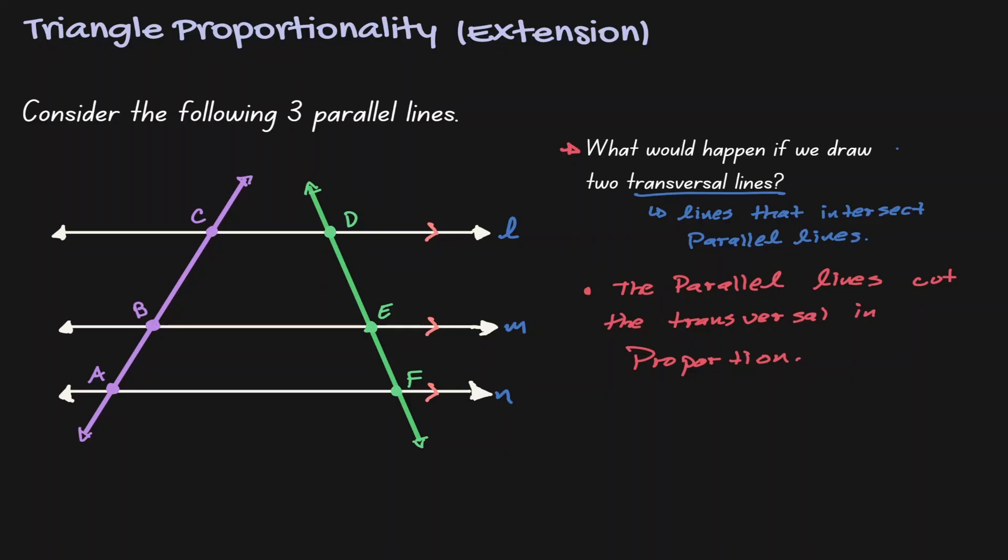And because this is true, if we get line segment AB and we divide it by the line segment BC, that should give us the same proportion as the line segment EF divided by the line segment DE.